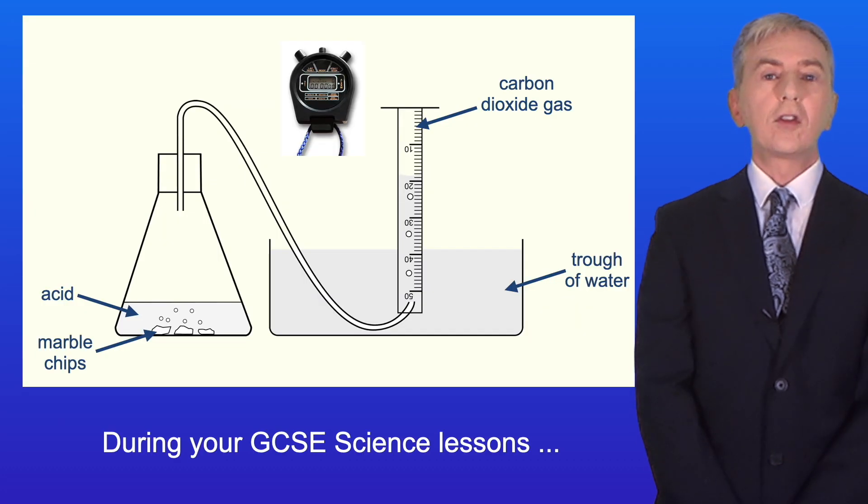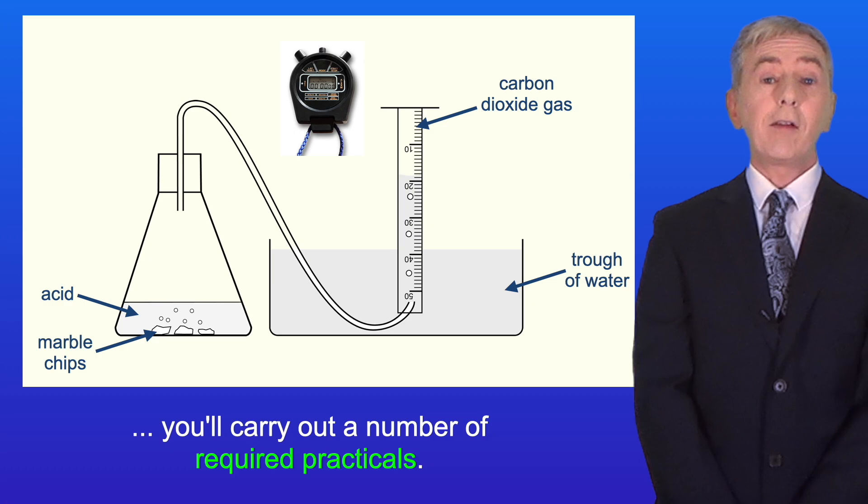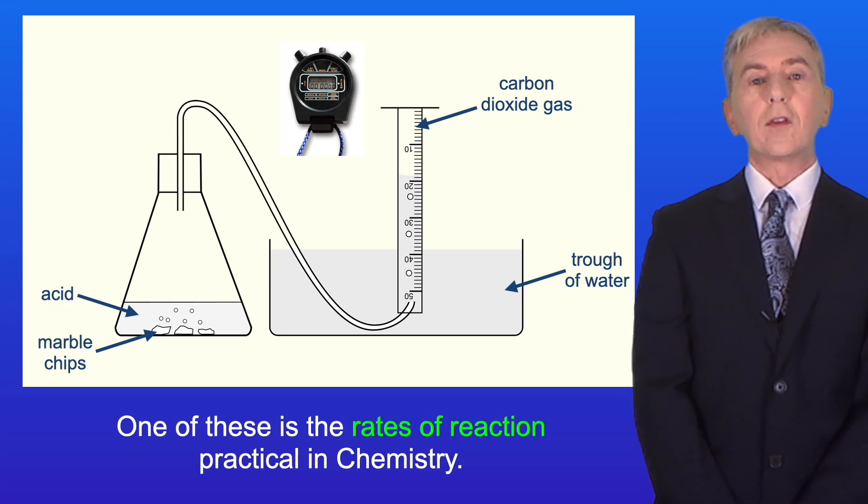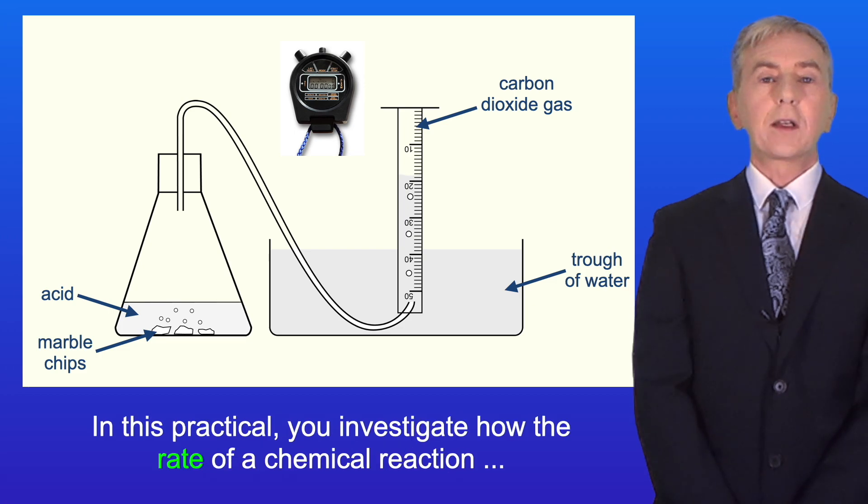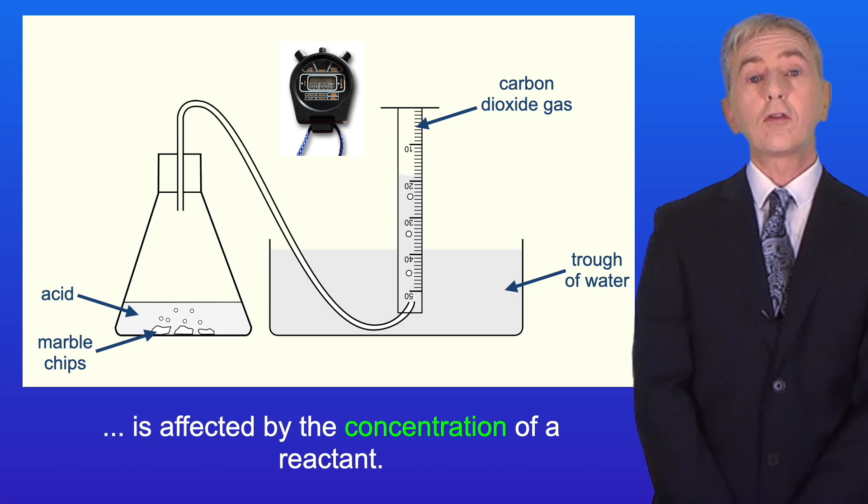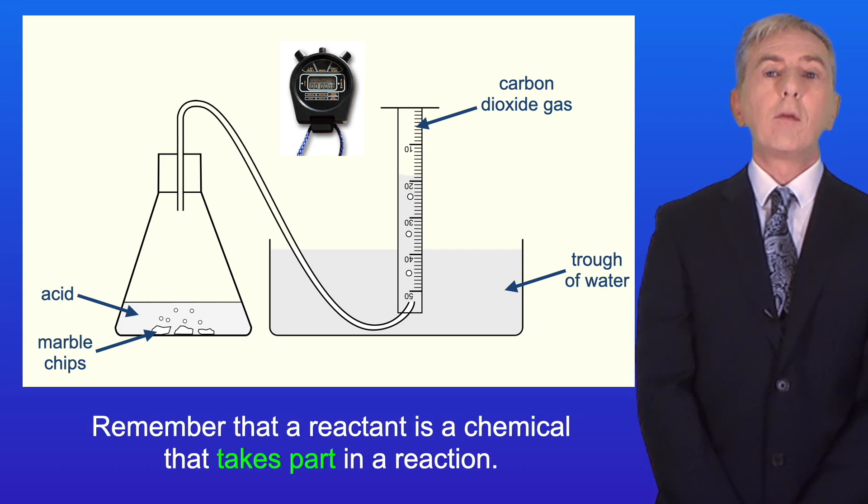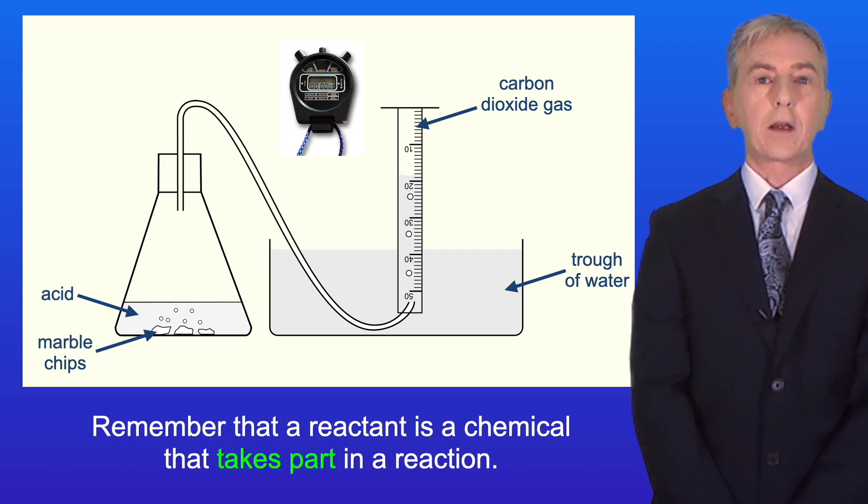During your GCSE science lessons you will carry out a number of required practicals and one of these is the rates of reaction practical in chemistry. In this practical you investigate how the rate of a chemical reaction is affected by the concentration of a reactant. Remember that a reactant is a chemical that takes part in a reaction.